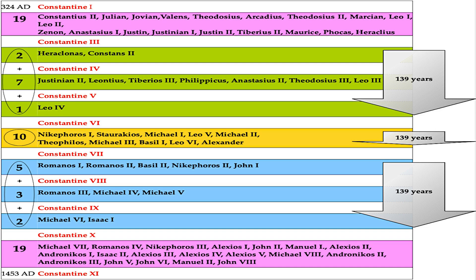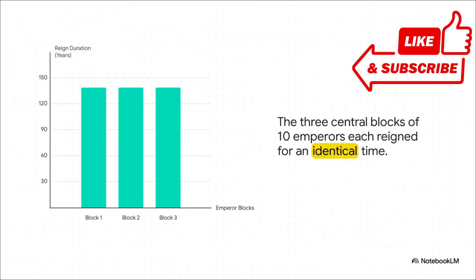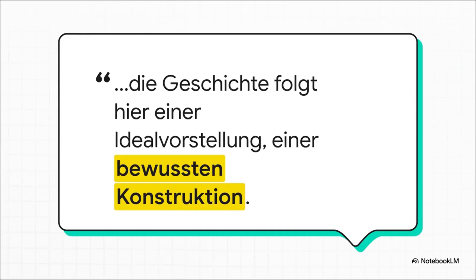Three different sets of rulers spanning more than 400 years of history, all neatly packaged into identical time capsules. The source's conclusion feels unavoidable: this time-based structure laid on top of the name-based structure can only be explained if history is following an ideal concept — a deliberate construction. The claim is crystal clear: this isn't history as it actually happened; this is history as it was written.